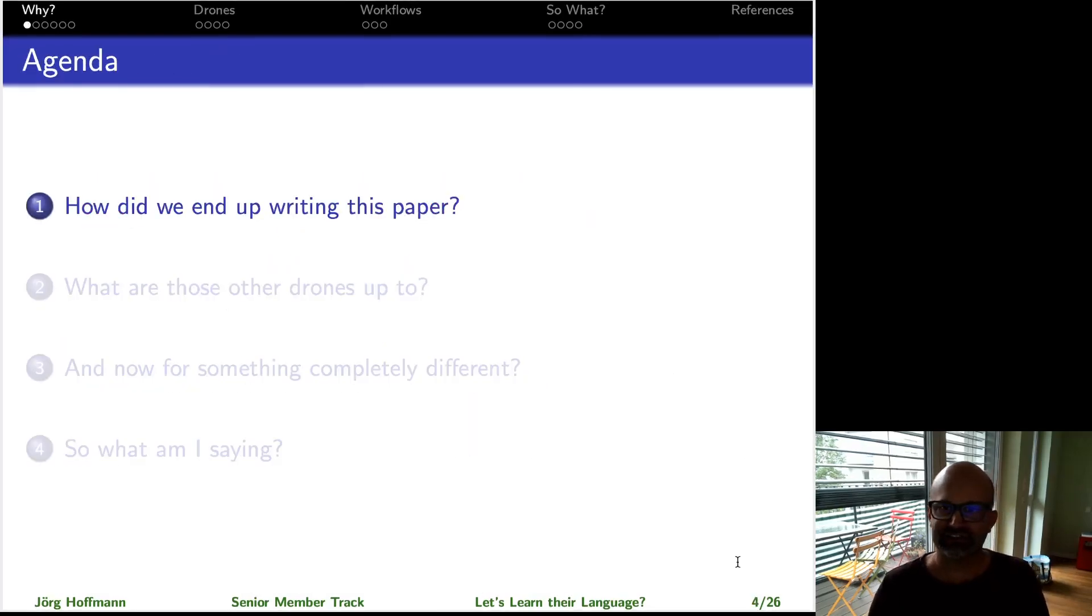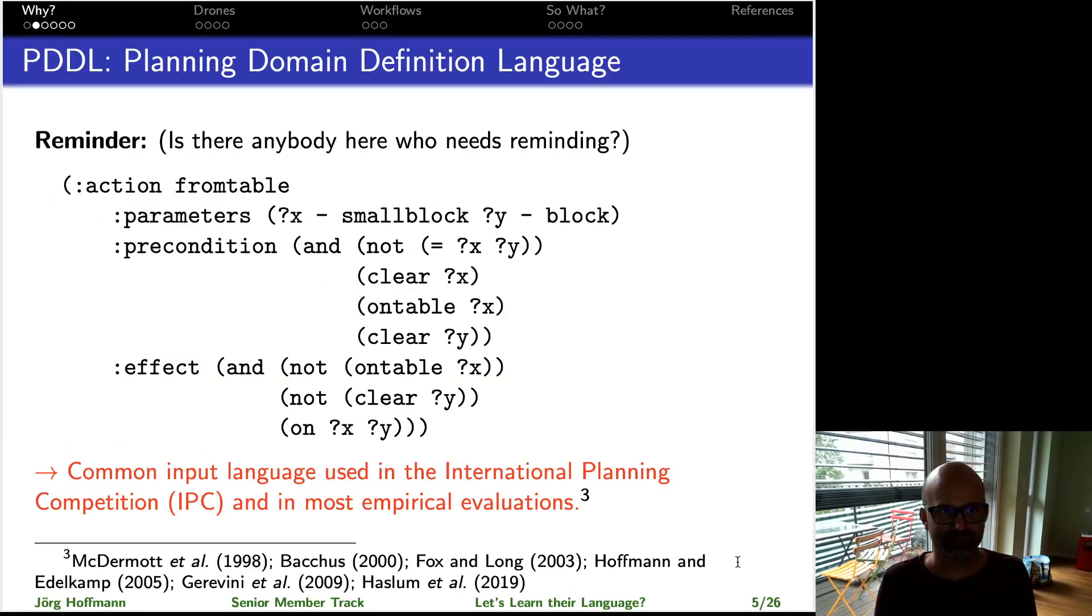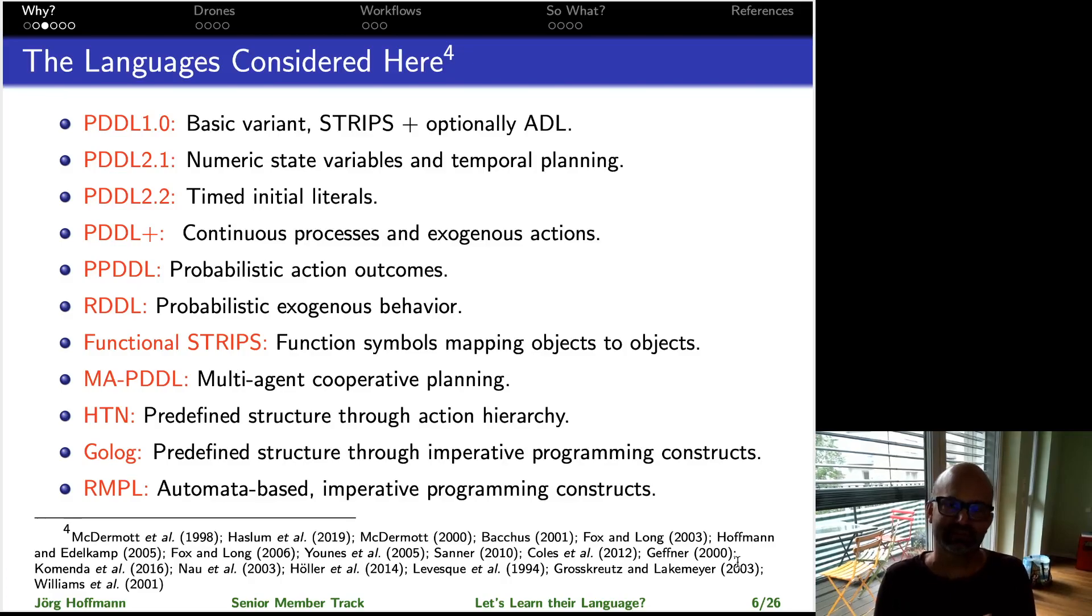Okay, first I don't have a history of advocating planning languages really, so how come I am writing this paper? Before I get to answering these questions, as a reminder, PDDL, the competition language, this is the range of languages we cover. As you can see it's pretty complete in terms of PDDL and derivatives and also some things that are not that closely related to PDDL, but it is not completely exhaustive of course.